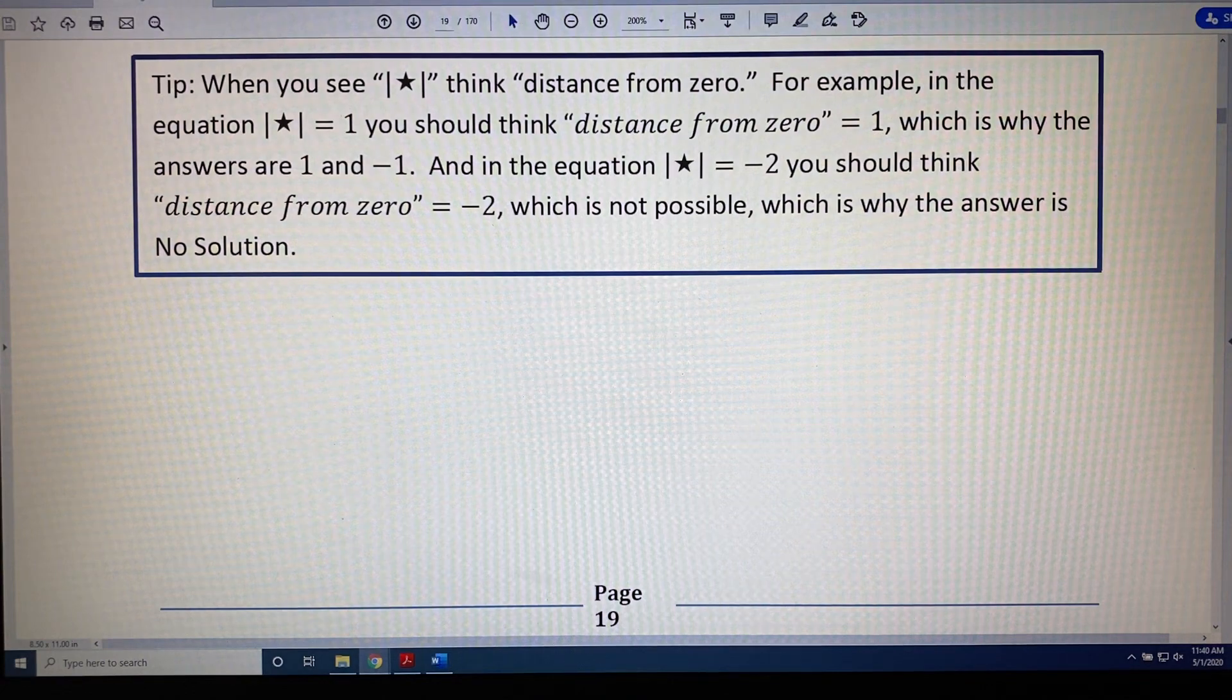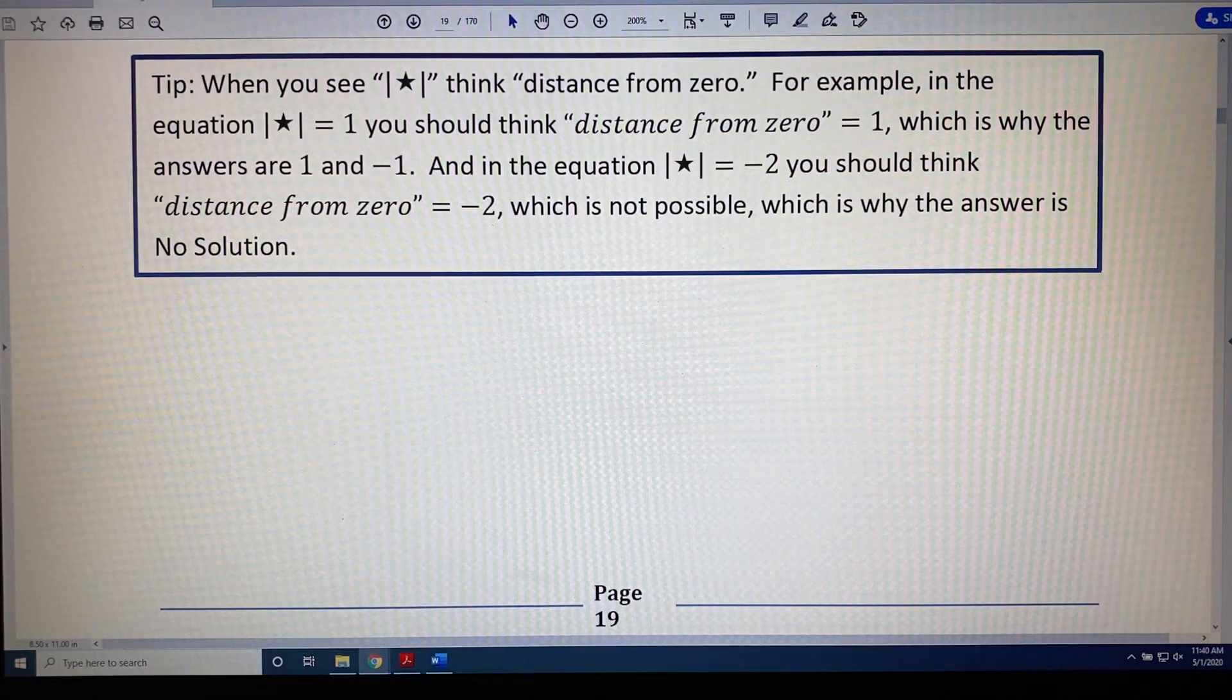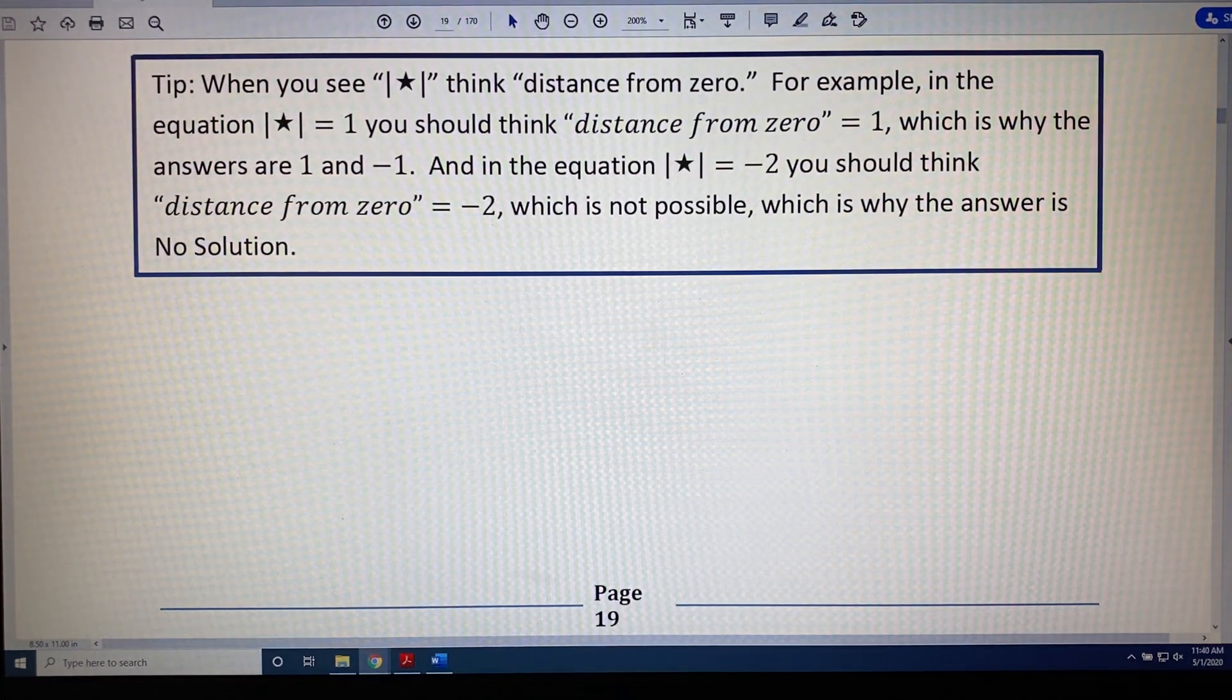When you see the absolute value of star, what I want you to think is distance from zero. For example, in the equation the absolute value of star equals 1, you should think distance from zero equals 1, which is why the answers are 1 and negative 1.